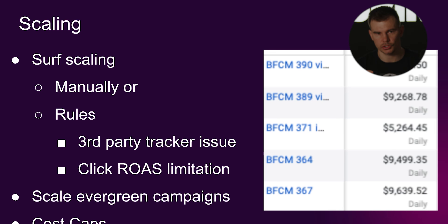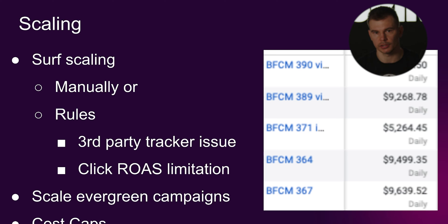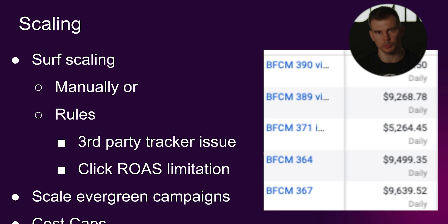In terms of scaling: one method is cost caps with Advantage Shopping+ on a high budget — if it's within my cost cap, it's okay for me to convert. I'm also scaling my evergreen campaigns. I'm a fan of day-parting during Black Friday when I know conversion rate will be higher — I do this manually when making decisions based on third-party tracking software like Triple Whale or Northbeam, because I can't set a rule to fire based on those numbers. If I'm making decisions based only on Facebook data, I can set an automated rule that fires multiple times during the day to increase budget when performance is there.